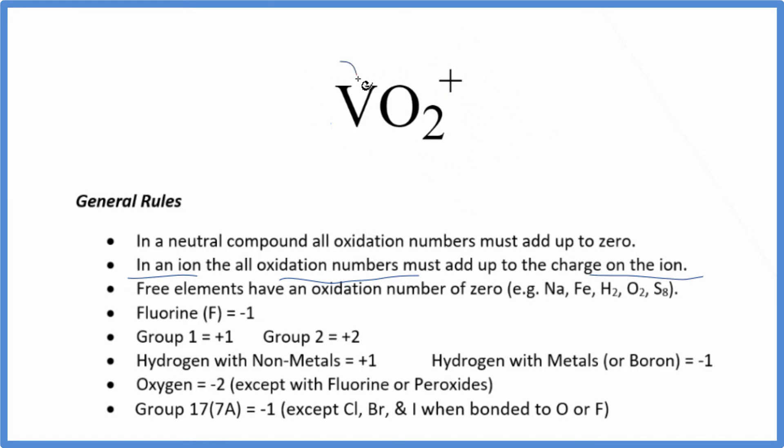We don't know the vanadium, we're going to call that X. But we do know that oxygen is almost always minus two, just a few exceptions. So each oxygen is minus two, and all of this here will equal plus one.